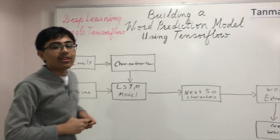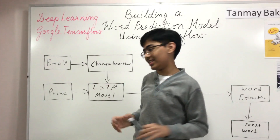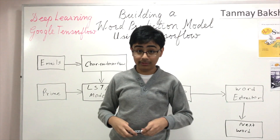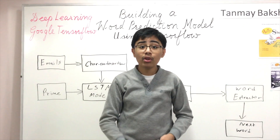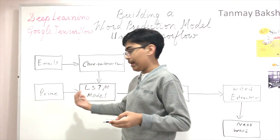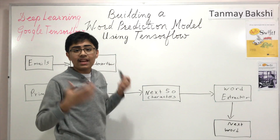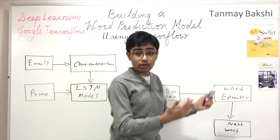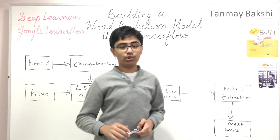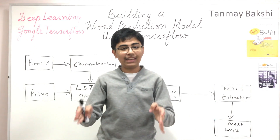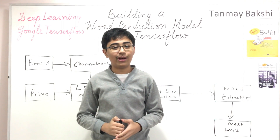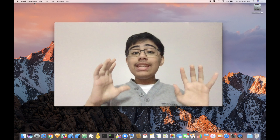That is the entire system diagram and logic behind how this system works. To recap: we feed training data into char-rnn-tensorflow, which trains an LSTM model. We then feed a prime into the LSTM model, which generates multiple words after the prime to create a paragraph of what I would say. It then takes those next 50 or so characters and feeds them into a word extractor, which extracts the next word after the prime text. That next word is what the LSTM predicts you would usually write given the context of the prime text.